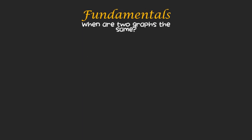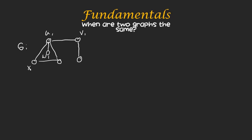We'll start by just drawing two different graphs and talk about what's the same between them and if we should consider them the same graph or not. So I'll define this graph G by just drawing it. It's going to look like this, and I'll label these U1, V1, W1, X1, Y1, and Z1.